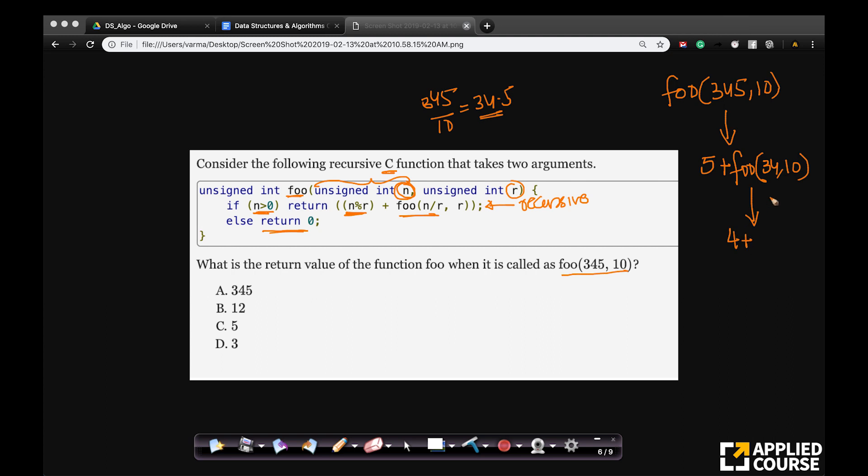4 plus foo of 34 by 10 is 3.4. But when you round it, because this only takes integers here, when you round it you get 3, 3 comma 10. Now what happens here? foo 3 comma 10.